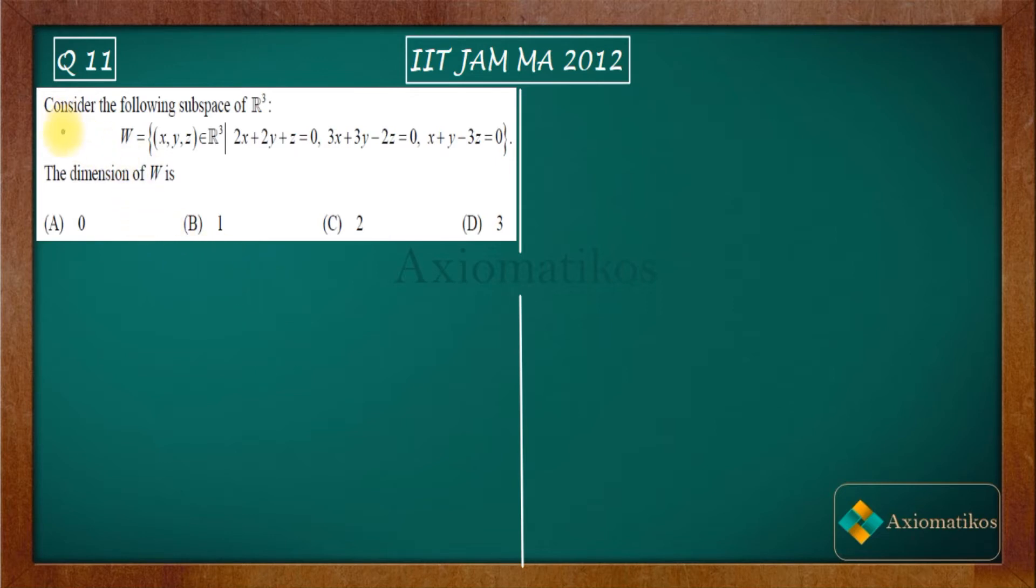Let us have a look. Consider the following subspaces of R cube. So W is defined like this. The question is asking us about the dimension of W. We have a subspace of R cube for which we have to find out the dimension.